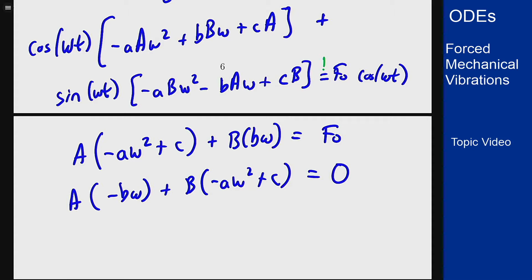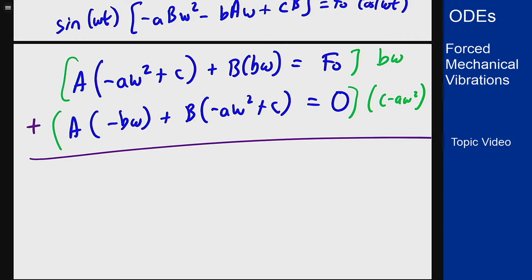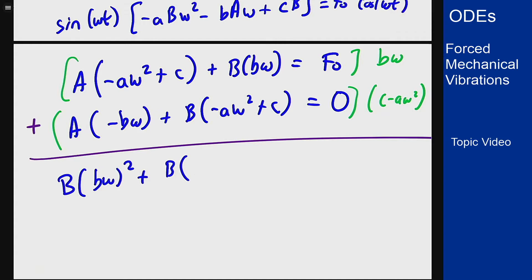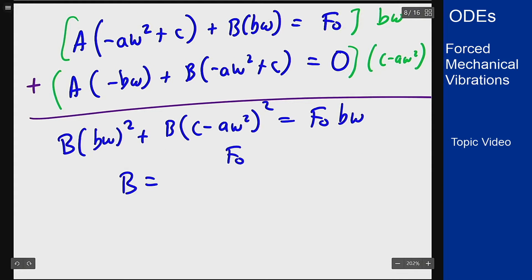Now I just want to solve these equations for big A and big B. I'm going to multiply the top equation by b times omega, multiply the bottom equation by c minus a omega squared, and then add them. Those A terms will cancel, and I will get B times b omega squared plus B times c minus a omega squared squared equals f0 times b times omega, which means the coefficient B is going to be f0 times b omega divided by b omega squared plus c minus a omega squared, all squared.